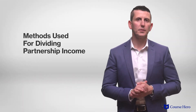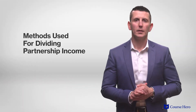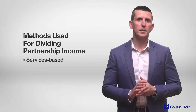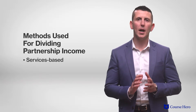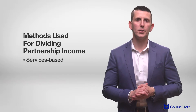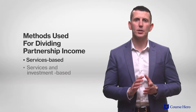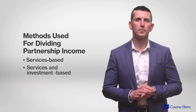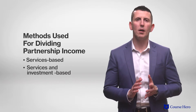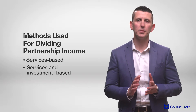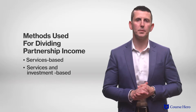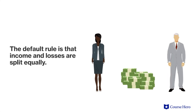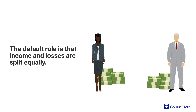There are two methods used for dividing partnership income. The first method is services-based, where income and losses are divided based on the amount of time each partner contributes to the partnership. The second method is services and investment-based, where income and losses are divided based on time contributed as well as the financial investment each partner makes. Keep in mind that if there is no specific agreement among the partners, the default rule is that income and losses are split equally.